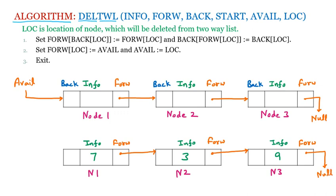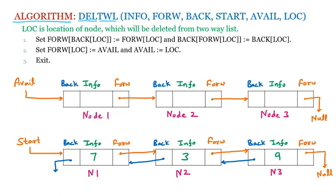The start pointer points to the first node. We also have a backward pointer: node 3's backward points to node 2's address, node 2's backward points to node 1's address, and node 1's backward points to null because there is nothing behind it. This is the two-way list — it can traverse in both the forward and backward directions.